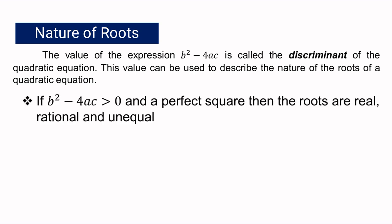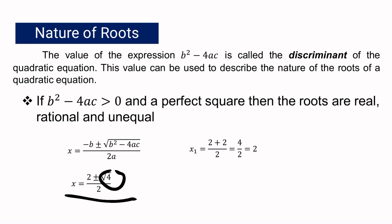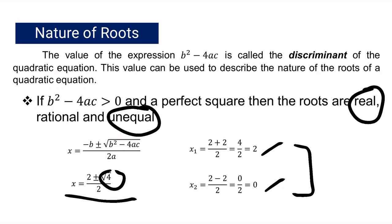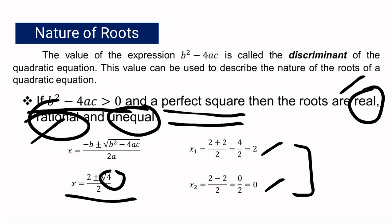For the second concept: if b squared minus 4ac is greater than 0 and a perfect square, then the roots are real, rational, and unequal. Using the quadratic formula with discriminant value of 4 — which is greater than 0 and is a perfect square — the square root of 4 gives positive and negative 2. So x sub 1 is 2 plus 2 all over 2, giving x sub 1 equal to 2. For x sub 2, taking the negative root gives 0 over 2, equal to 0. Since 2 and 0 are unequal, real, and rational, the roots are real, rational, and unequal.